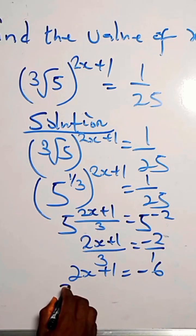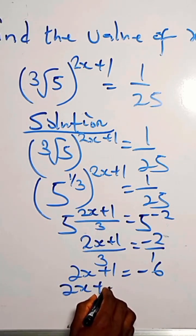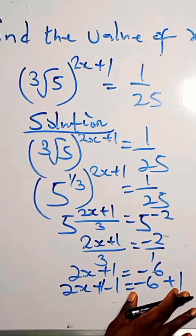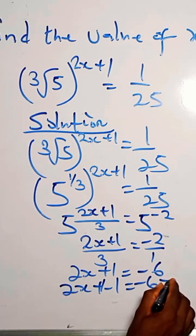We subtract 1 from both sides. So we have 2x plus 1 minus 1 equals minus 6 plus 1—sorry, minus 6 minus 1.